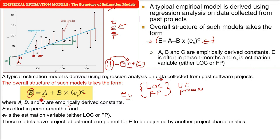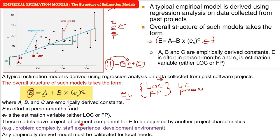These models have a project adjustment component for E also. These are adjusted by project characteristics: problem complexity, staff experience, and development environment. These empirically derived models must be calibrated for your local needs because every project, everywhere work is done, is different from another. This is how the basic structure of estimation is formed.